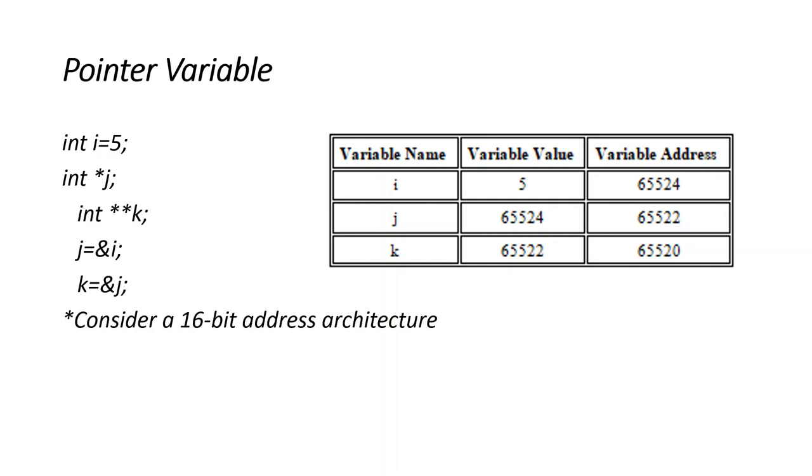Now the value of j is 65524, which is the address of i, and k value is 65522, which is the address of j. Here we consider 16-bit address architecture.